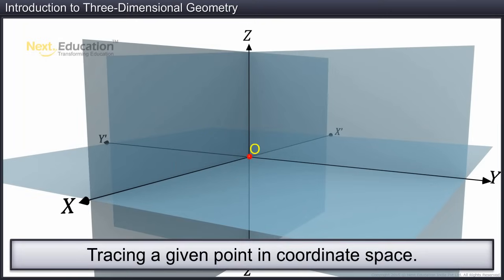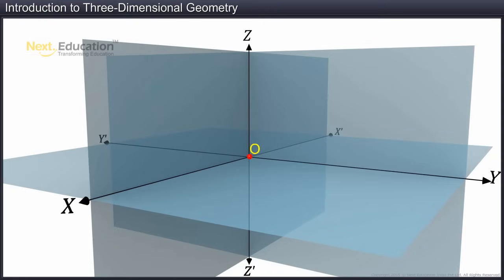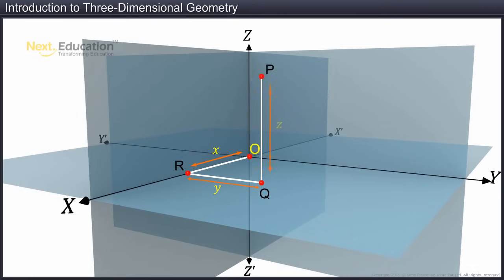If we are given the coordinates of a point, then we can trace the point as shown. First, we will identify a point, say, R, on the x-axis which is at a distance x from the origin. Next, we draw a perpendicular of length y from point R, parallel to the y-axis on the x-y plane, to a point, say, Q. Lastly, we draw a perpendicular of length z from point Q, perpendicular to the x-y plane.